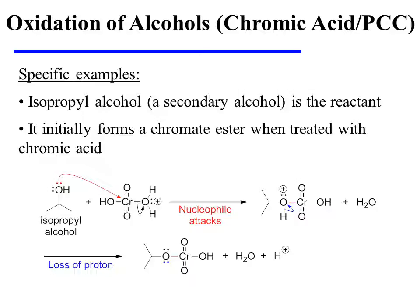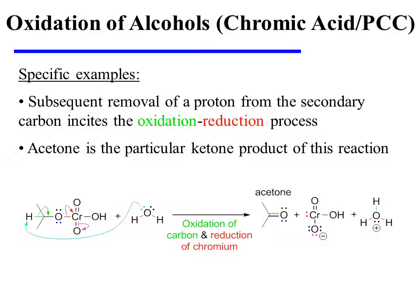In this specific example, isopropyl alcohol, a secondary alcohol, is the reactant. It initially forms a chromate ester when treated with chromic acid. The subsequent removal of a proton from the secondary carbon incites the oxidation-reduction process. The electrons from the carbon-hydrogen sigma bond collapse in between carbon and oxygen to form the carbonyl of acetone, the major organic product of this reaction.